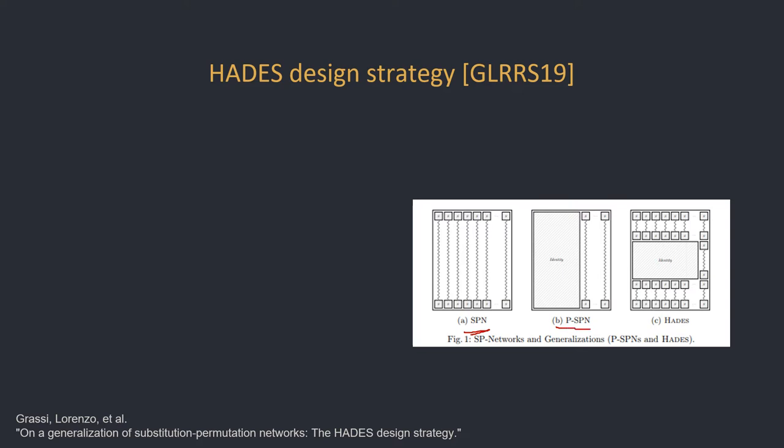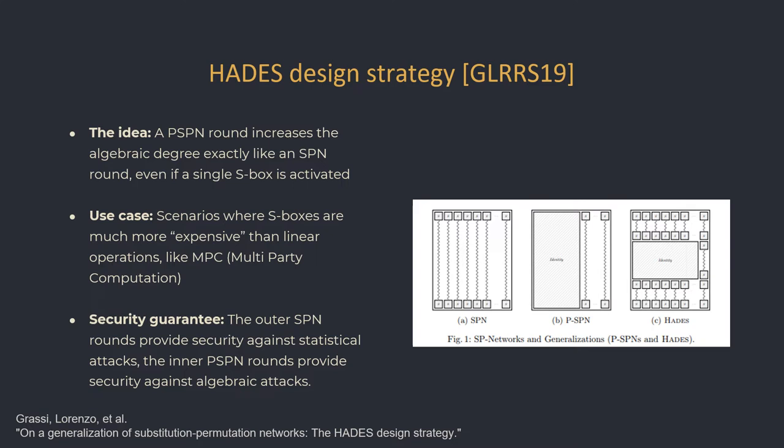Partial SPN is a newer design in which only some of the states go through an S-box in each round. In the Hades design, the first and last few rounds are full SPN rounds, while the middle layer consists of partial SPN rounds. The idea is to use the full rounds to ensure security against statistical attacks, and use the middle partial rounds to ensure security against algebraic attacks, as even a partial round with one S-box has the same algebraic degree as a full round.